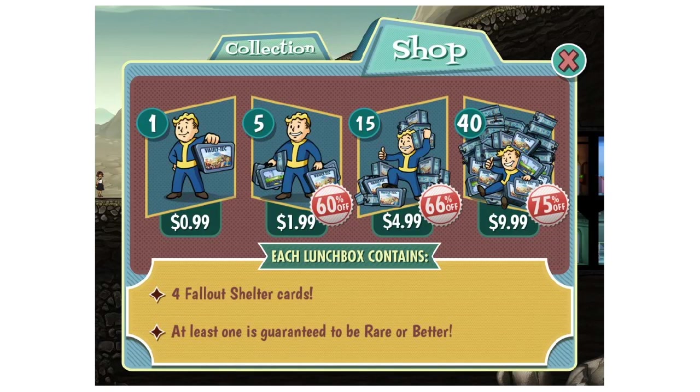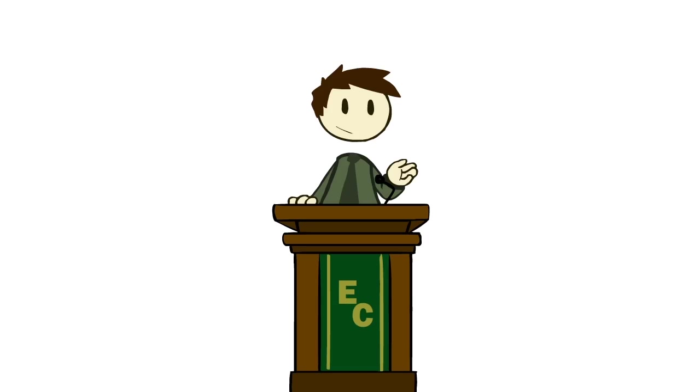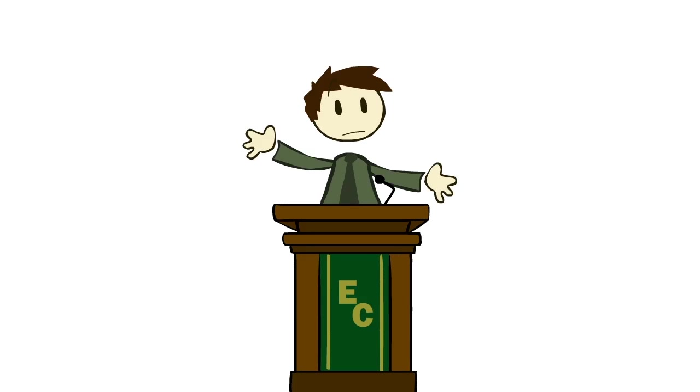Lunchboxes, the gachapon mechanic in Fallout Shelter, can occasionally be gotten by completing quests. What's interesting, though, is that the system is so explicit about the fact that all the best stuff will only be gotten through buying lunchboxes.